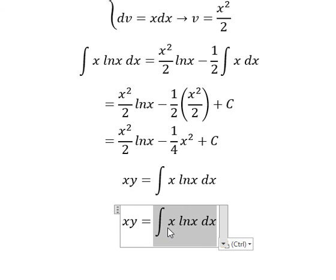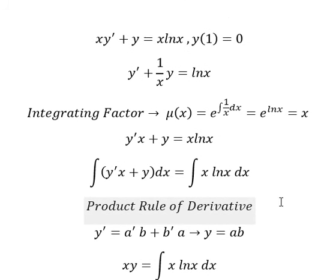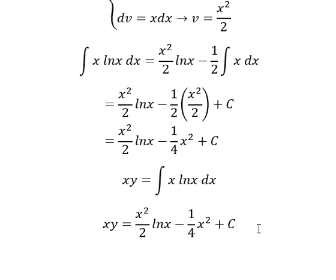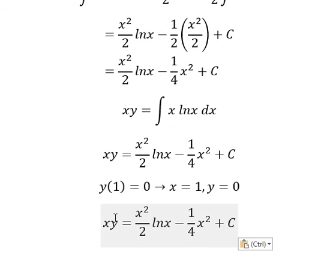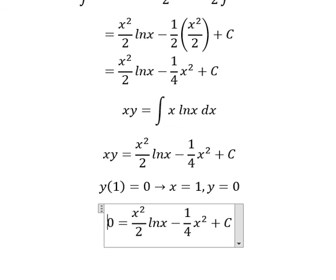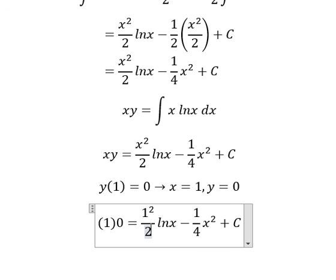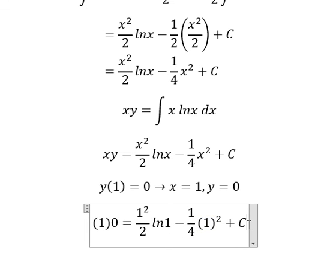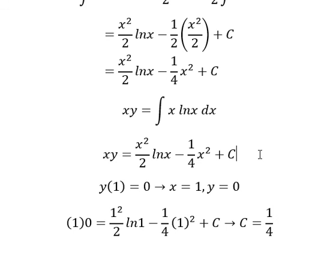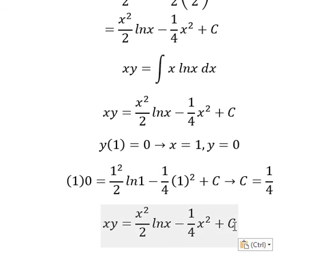Now we go back and substitute. We apply the initial conditions: s equals 1 and y equals 0. Substituting these values in to find C, and simplifying, we get C equals 1/4.